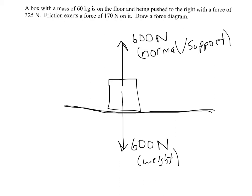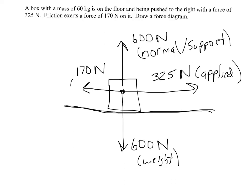Then it is being pushed to the right with a force of 325. So we'll draw that in, 325. Since this is the force of it being pushed, we're going to call this the applied force that we're applying to the box. And then friction exerts a force of 170 newtons on it. So if the box is moving to the right, friction is going to act to the left, 170 newtons. That's friction.